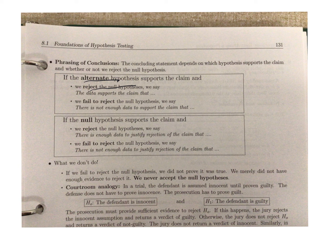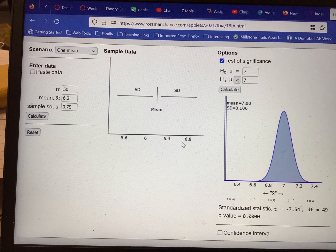The slick way to do that is to use that Rossman Chance calculator.